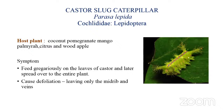This pest damages the castor plant sporadically. The scientific name is Parasa lepida, belonging to family Limacodidae and order Lepidoptera. It is also known to attack coconut, pomegranate, mango, palmyra, citrus, and wood apple. The caterpillar is spiny and causes skin irritation when touched.